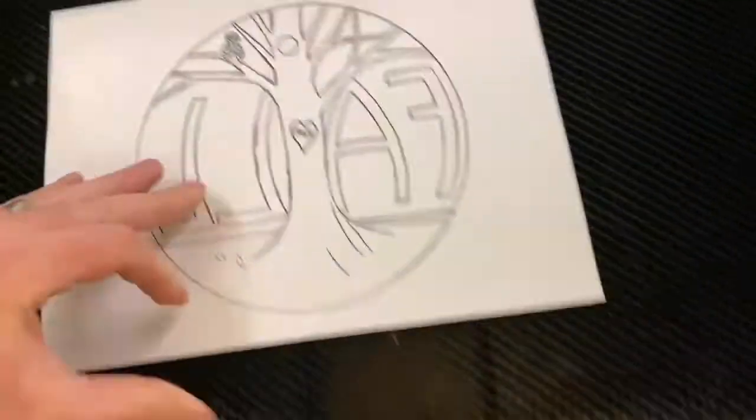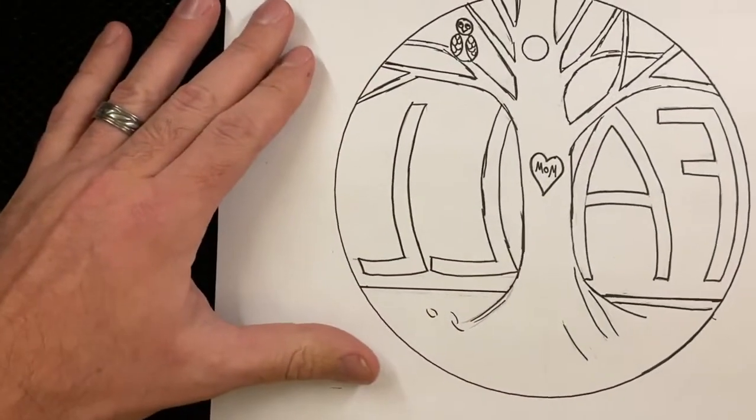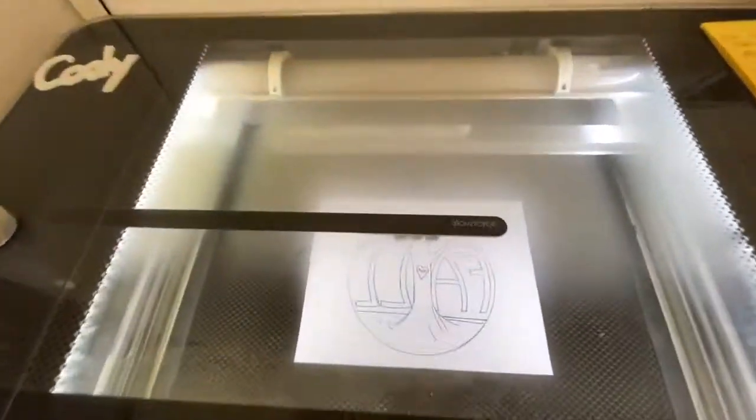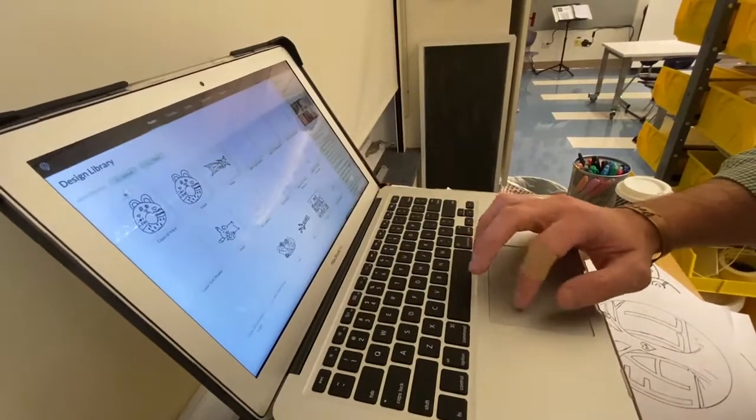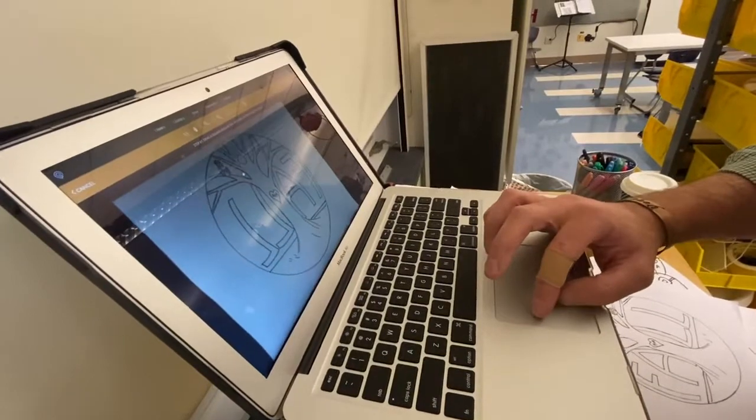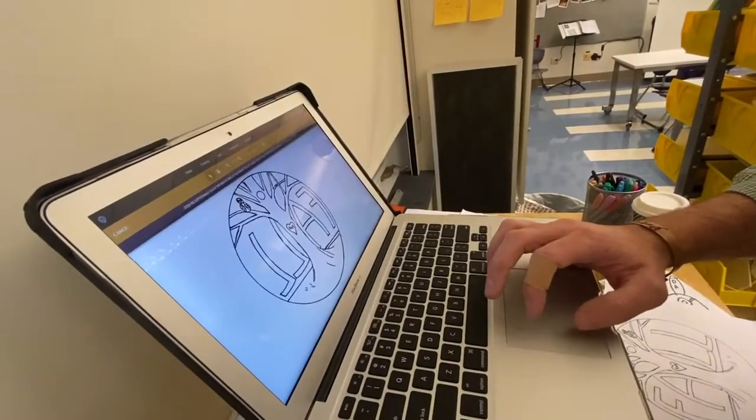Next, we take the mirror image and we scan it in the Glowforge. The camera on the lid of the Glowforge is what takes the picture of your design. Then, it's uploaded to the internet and we use the laptop to select and edit the parts of your design you want cut versus engraved.